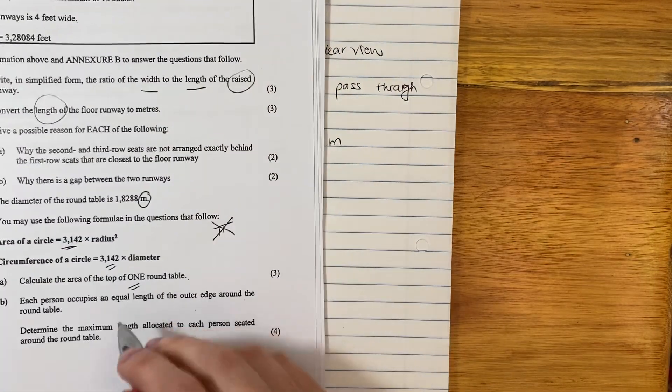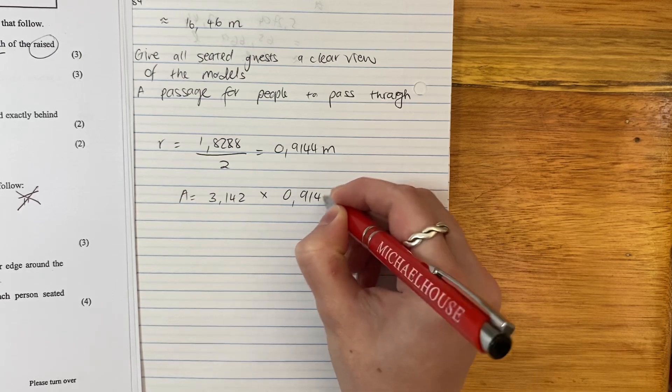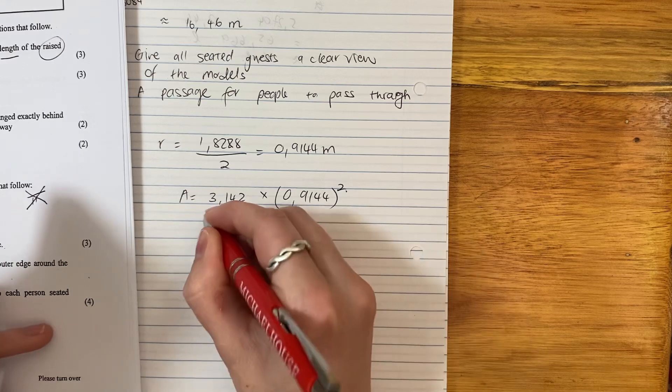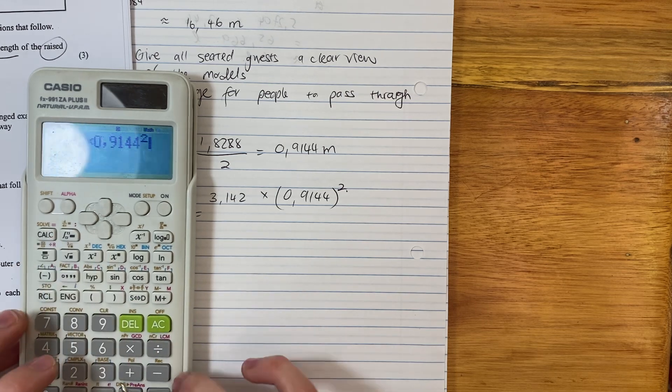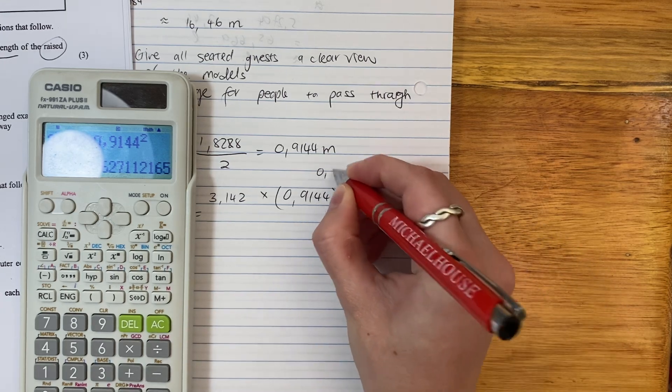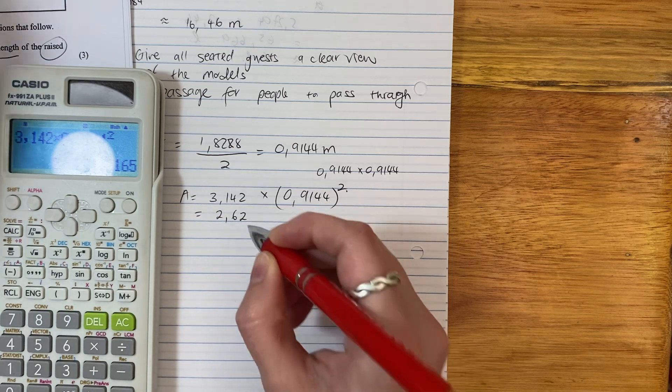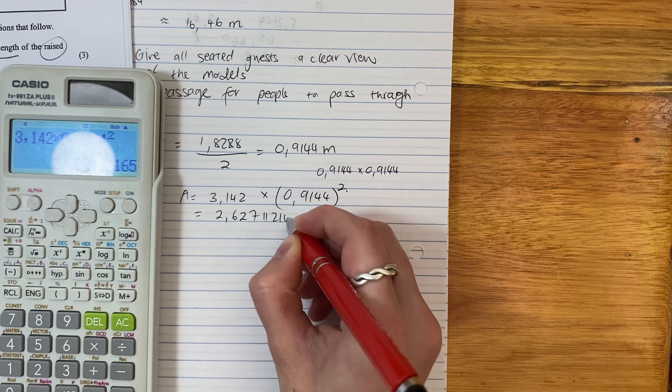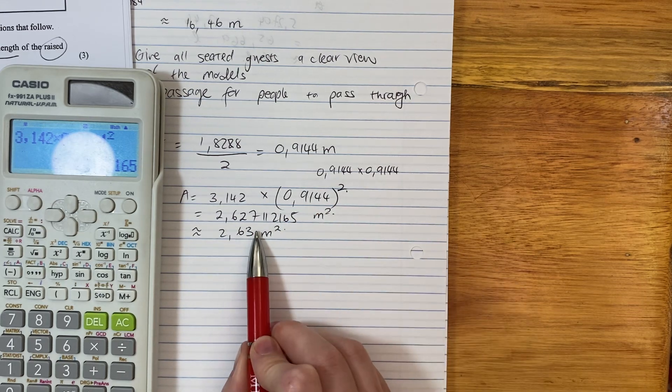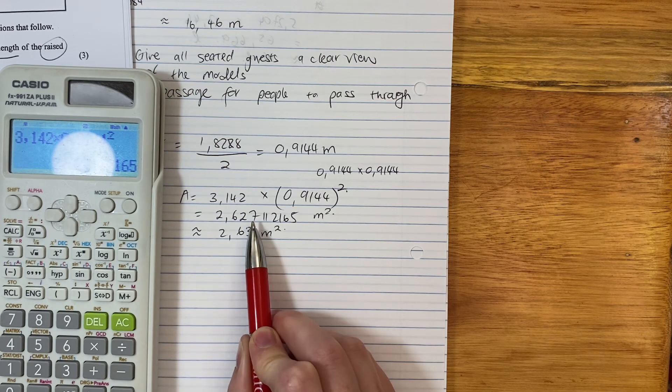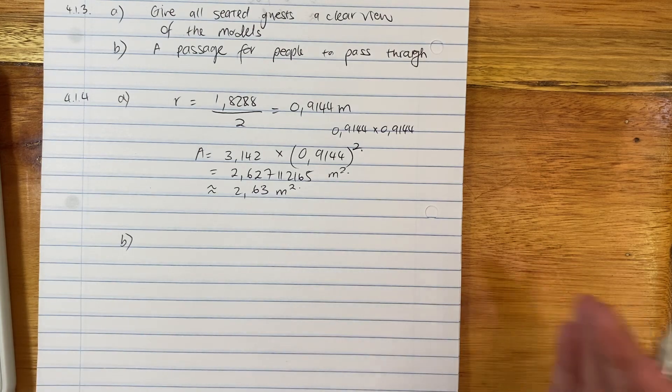The area of the top of one of these circles is going to be 3.142, which is using our formula here, times the radius squared. Now don't forget that squared. Students often forget that and then the answer is wrong. So 3.142 times 0.9144 squared. Remember squared just means times by 2. My answer is 2.627. Round it off, and remember this is meters squared. You can round it off to 2.63 meters squared. We look at the third decimal place. 7 is above 5, and so we round up.